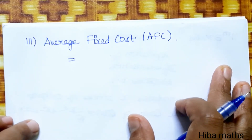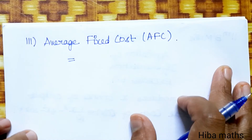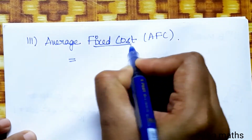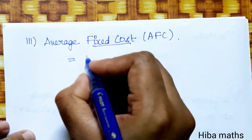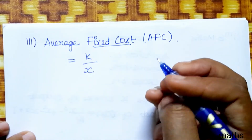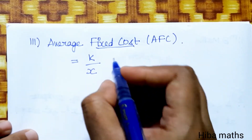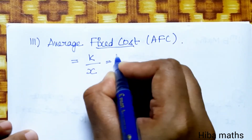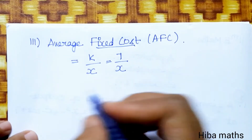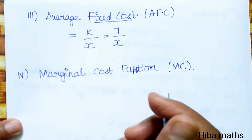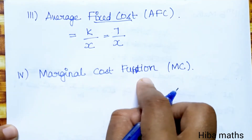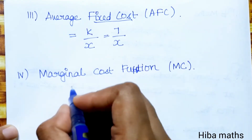The third subdivision: average fixed cost. Fixed cost is the constant divided by x. The constant is 7, so average fixed cost equals 7 divided by x.